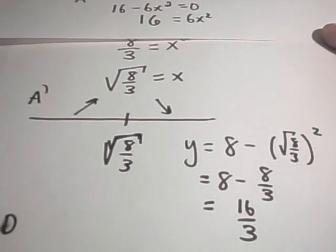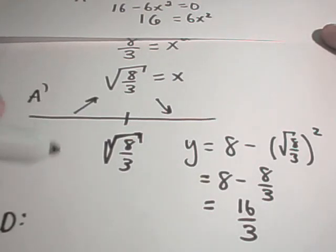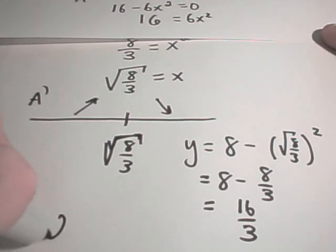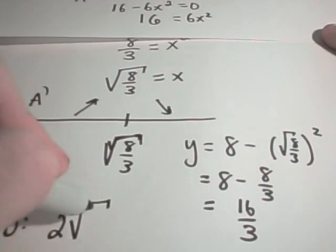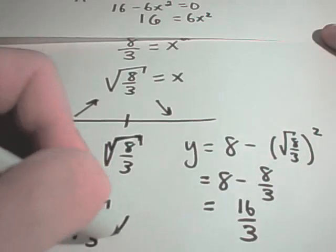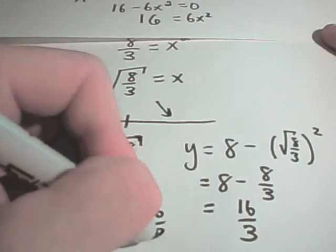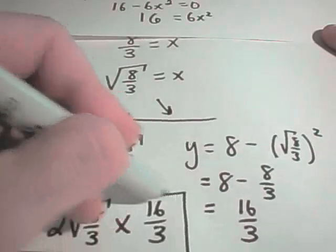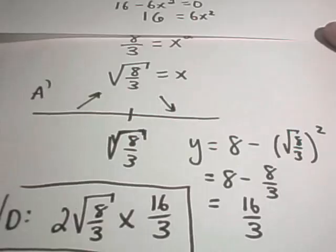So, it looks like the dimensions of my rectangle. Remember, the width was twice x. So, it looks like it's going to be 2 times square root of 8 over 3 by 16 thirds will be the dimensions of my rectangle in this case.